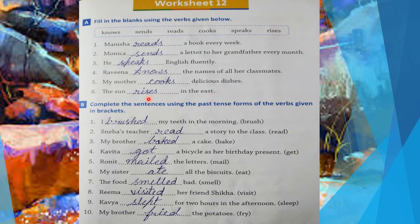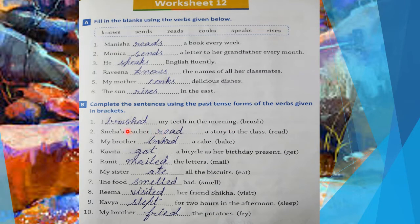Question number B: complete the sentences using the past tense forms of the verbs given in brackets. We have to complete them using the second verb form. The first is: I brushed my teeth in the morning — fill 'brushed'. Second: Sneha's teacher read a story to the class — fill 'read'.